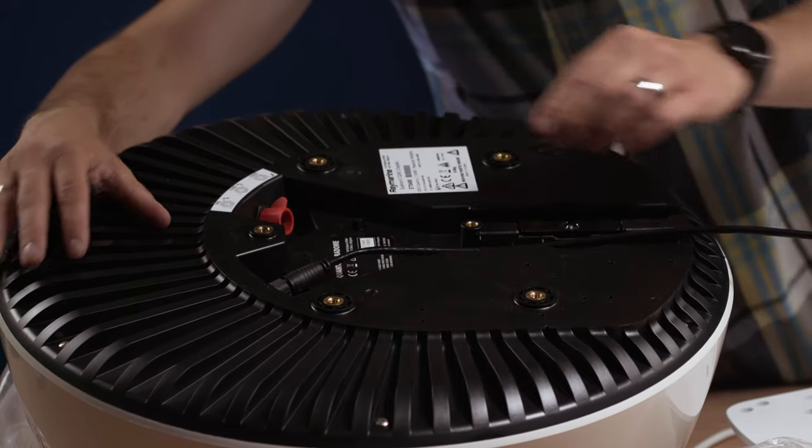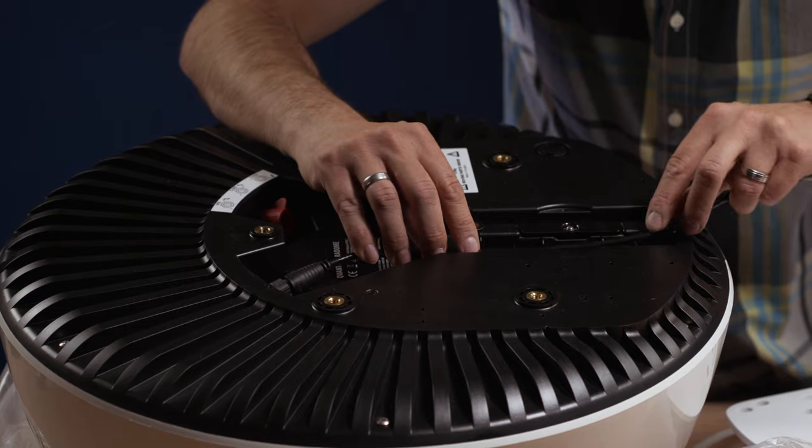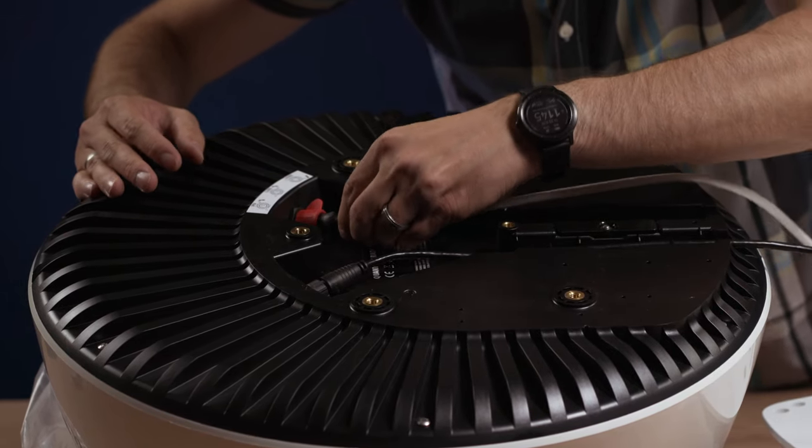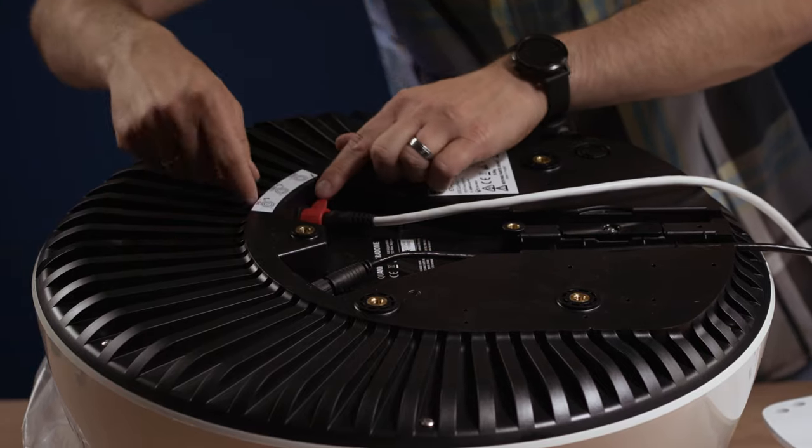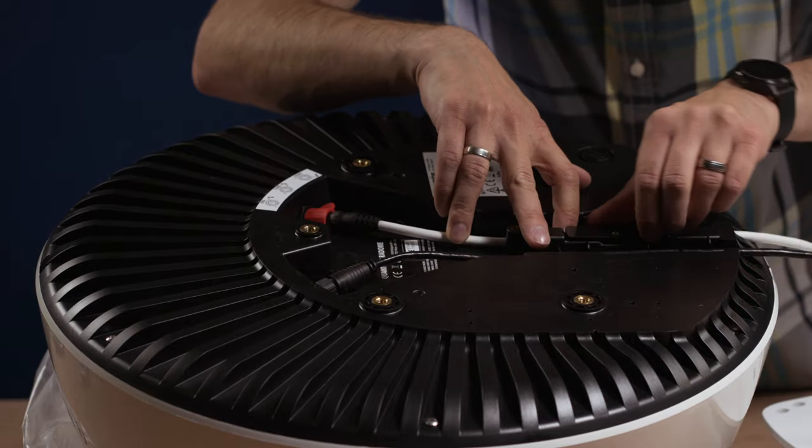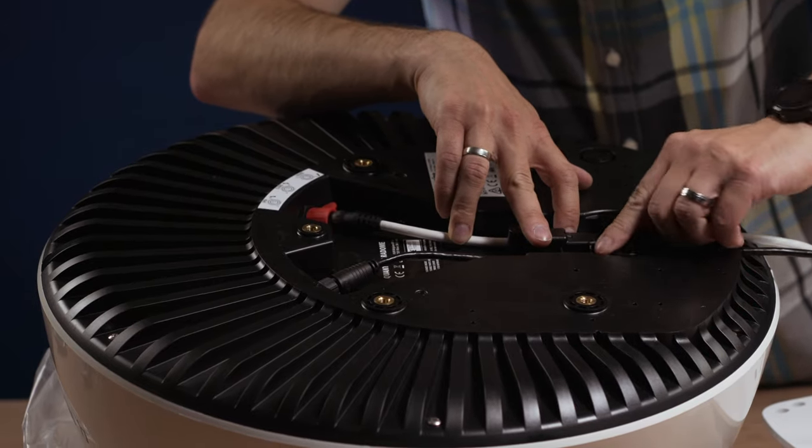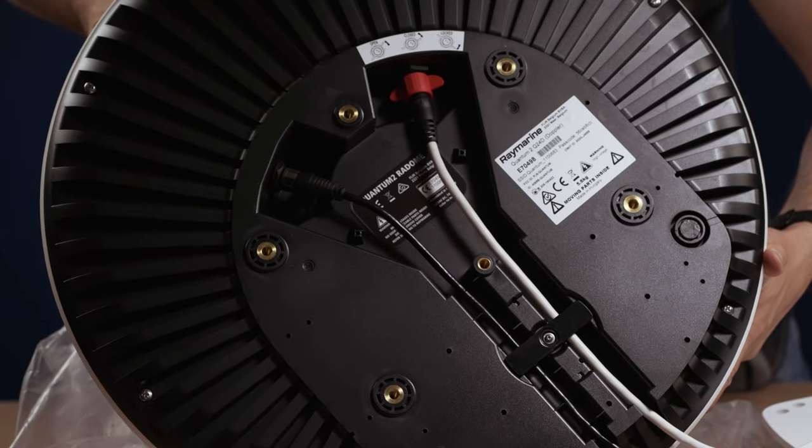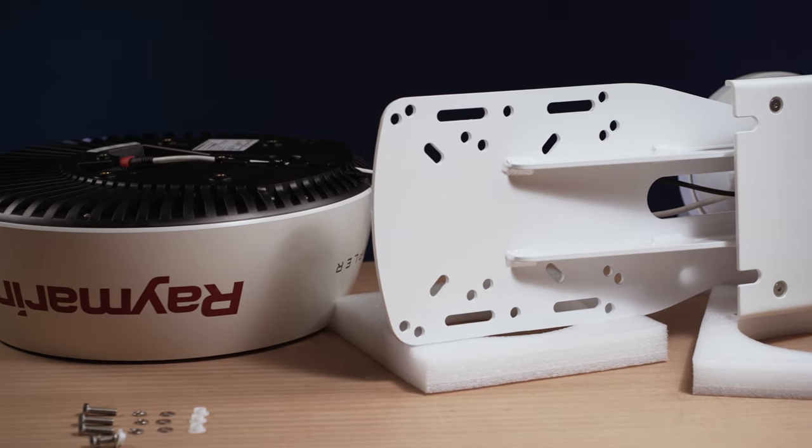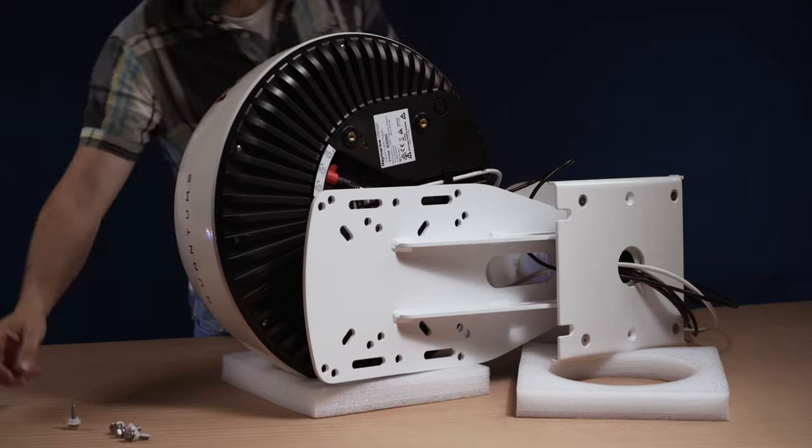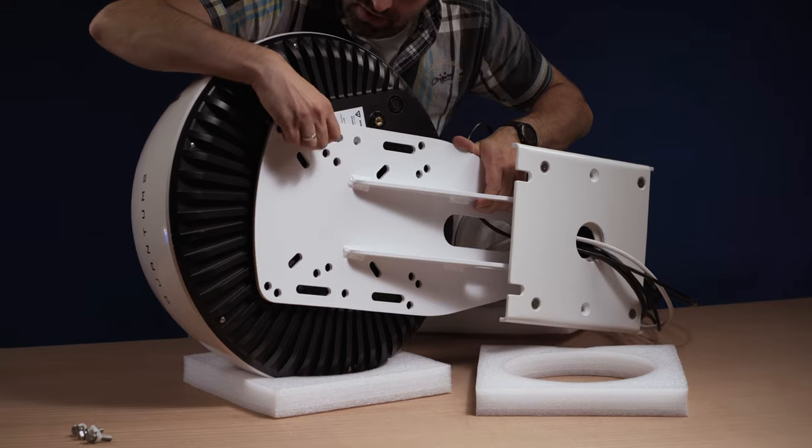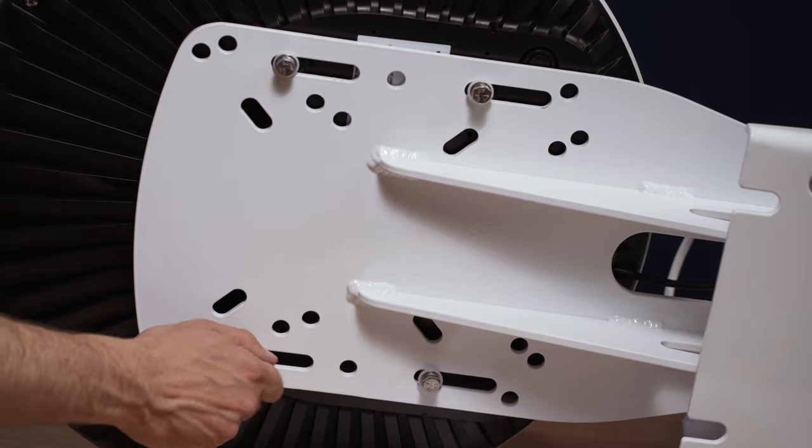Connecting the cables is quick and easy on the underside of the Raymarine Quantum II radar antenna. The radar antenna is then attached to the mount with four screws. The slotted holes allow for some play to align the antenna perfectly.